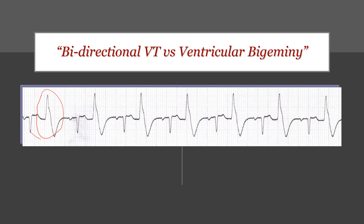Between these two beats, I'd be expecting the beat in the middle to happen somewhere here in the middle, but actually this beat has happened earlier than expected, followed by a pause — and the same applies here. In addition to that, normal beats are preceded by a clear P wave, while the PVC is not preceded by a P wave because it's coming from the ventricle.